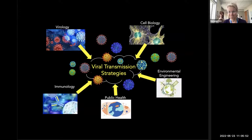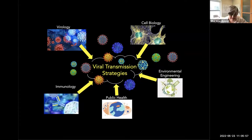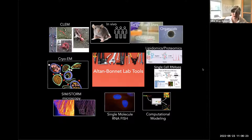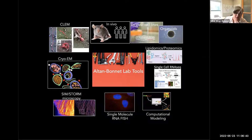Thank you so much, Melanie, for the kind introduction. As Melanie just mentioned, in my lab at NIH we're very much interested in exploring viral transmission strategies. Toward this goal, we work at the crossroads of a wide variety of disciplines from virology and cell biology to immunology, public health, and even environmental engineering. We have a diverse box of tools including in vivo and ex vivo models, super-resolution imaging techniques like CLEM, cryo-EM, SIM/STORM microscopy, and single-molecule viral genome imaging through FISH. We also take advantage of lipidomics, proteomics, single-cell RNA-seq, and a lot of computational modeling.